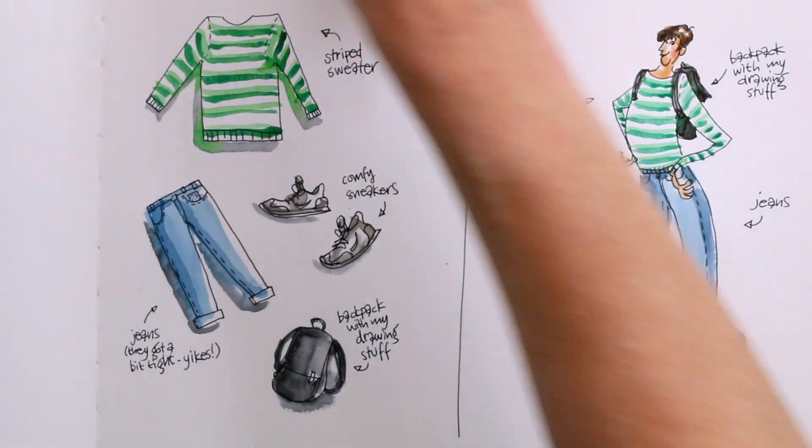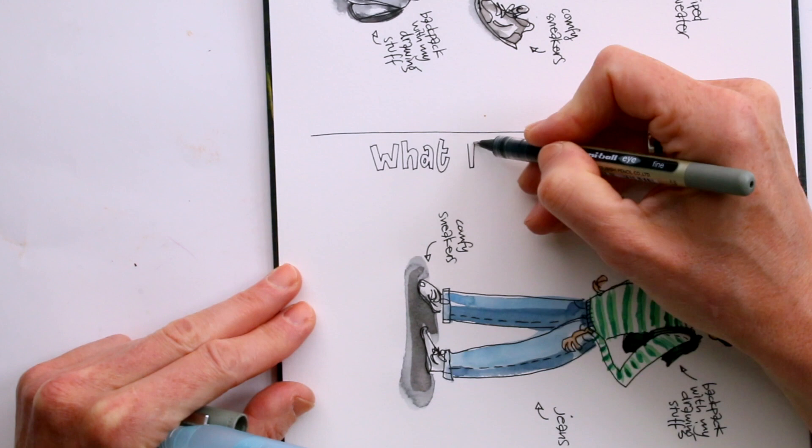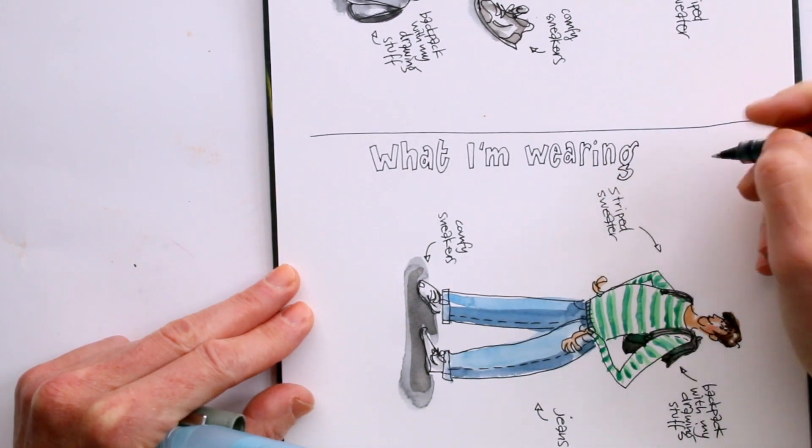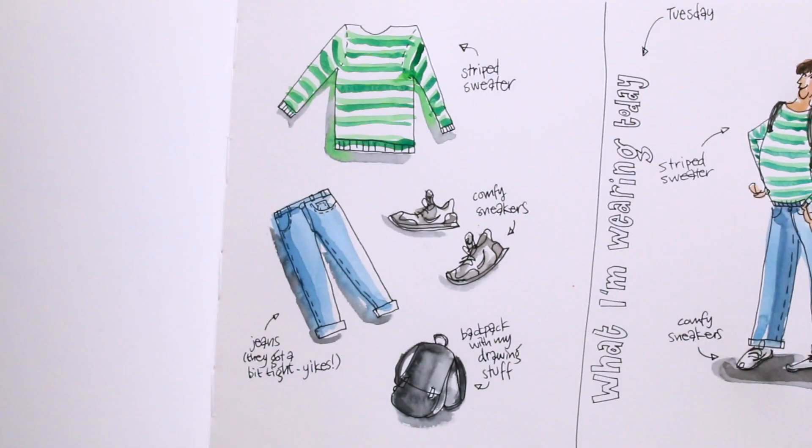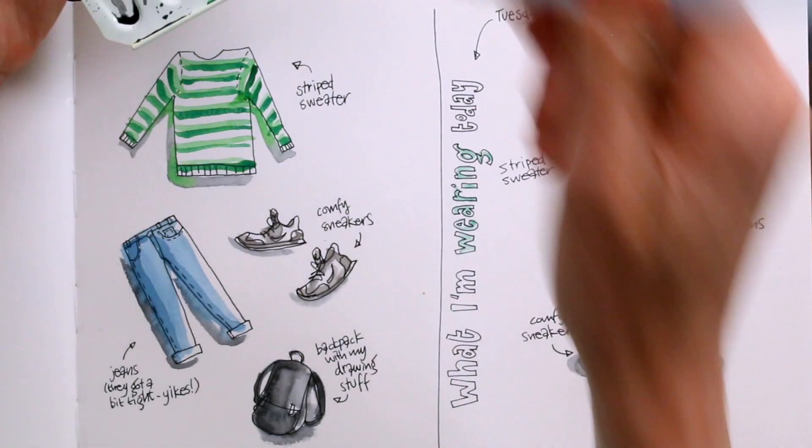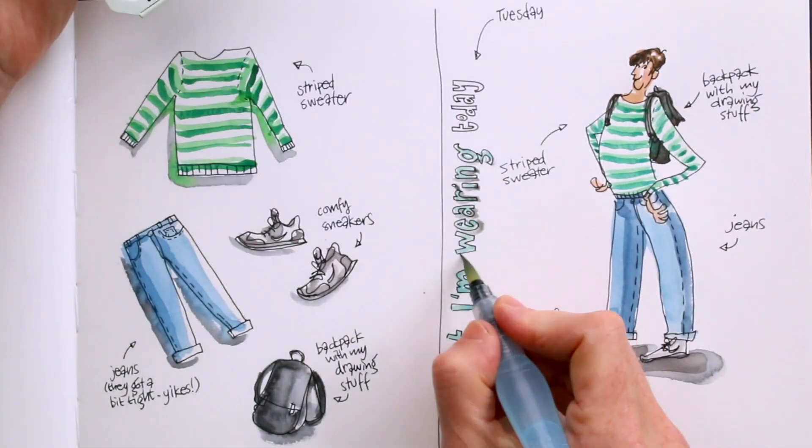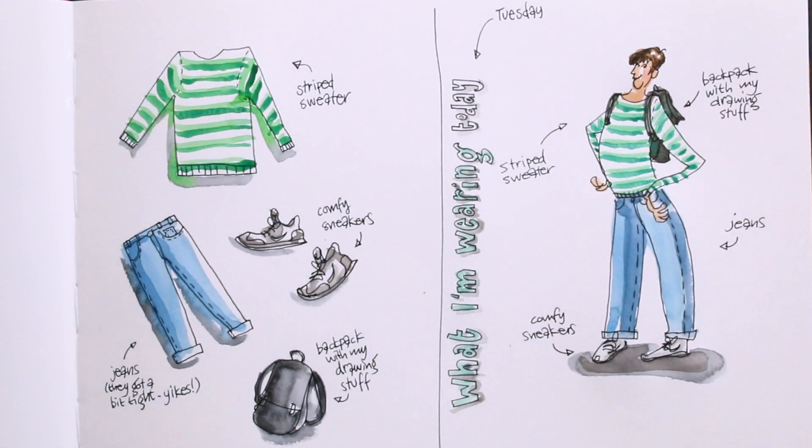And now, to finish things off, I will add a little bit of extra lettering, just because it's fun, giving this drawing a title. And then, I also like adding a little bit of color to the title, which is matching the color of my drawing. And just a little bit of shading to give the lettering a little bit of an extra oomph.